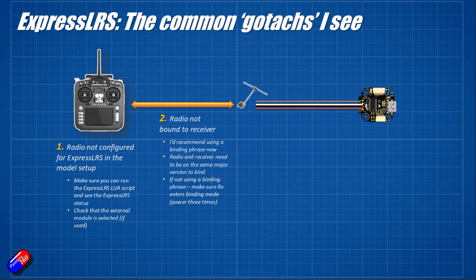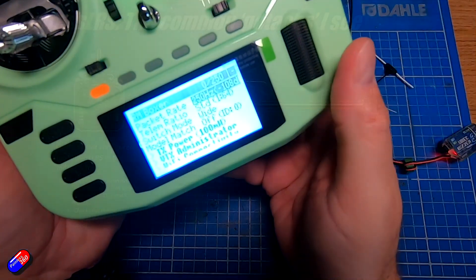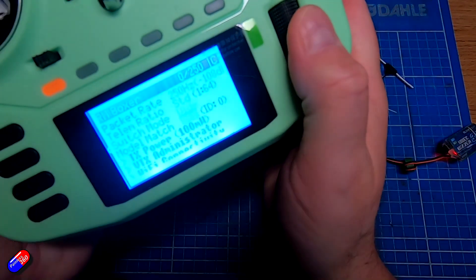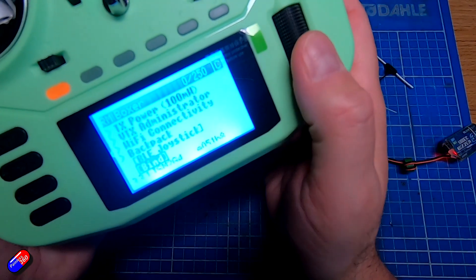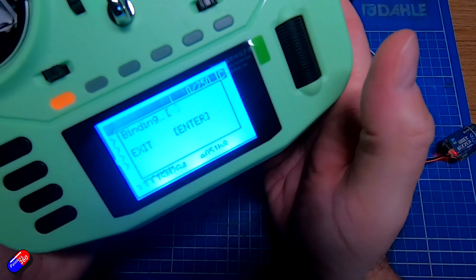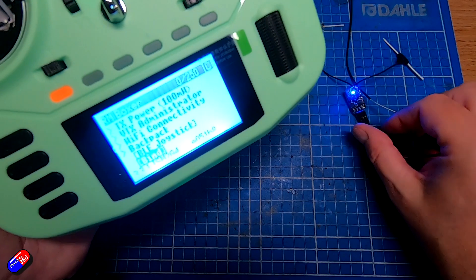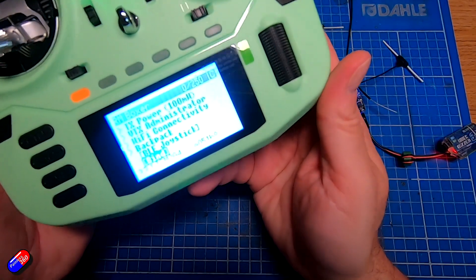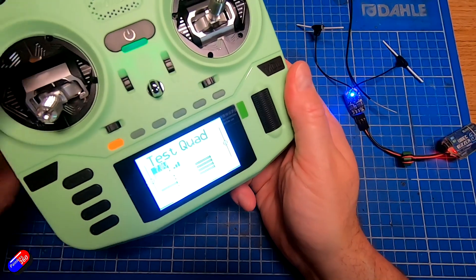The next one then is making sure that the radio is bound to receiver. Now I have made a video on this. I'll put a link down below if you want to come watch it. There are two main ways to do your binding, the kind of traditional way where you power the receiver three times, which is not the way that I'd recommend you do it these days, or the way that I would recommend doing it now is putting a passphrase on both the receiver and the radio. Again, I made a video about that link down below.